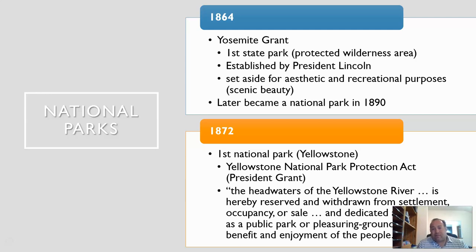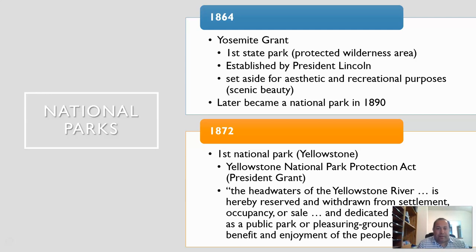During 1872 we got our first national park, Yellowstone. The quote reads: 'The headwaters of the Yellowstone River is hereby reserved and withdrawn from settlement, occupancy, or sale, and dedicated and set apart as a public park or pleasuring ground for the benefit and enjoyment of the people.' The idea behind national parks was not only to set them aside for public enjoyment, but also to protect the headwaters of the Yellowstone River.